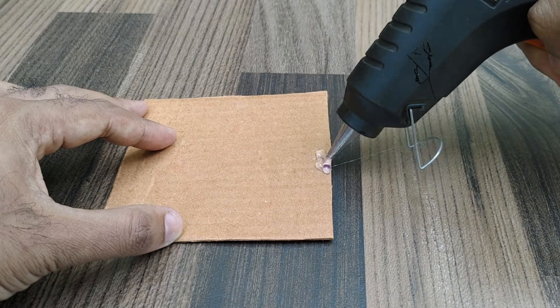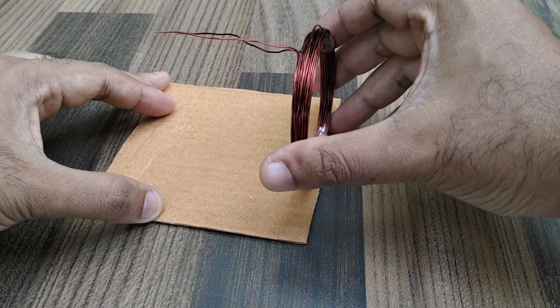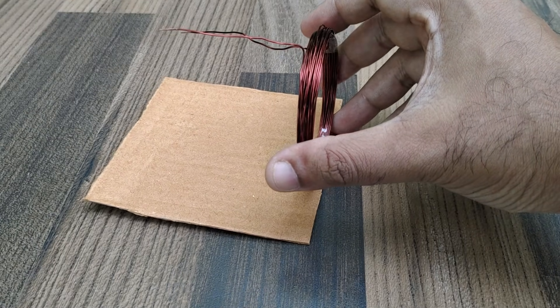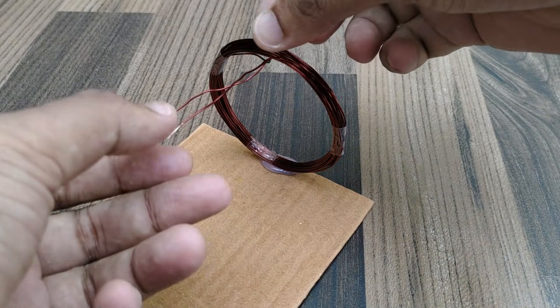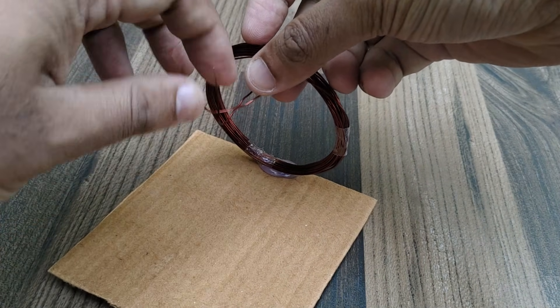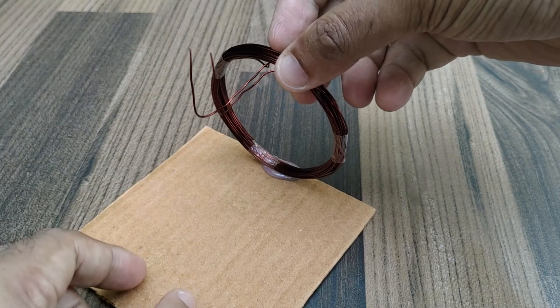Now we will make the receiver circuit. This is very easy. We just have to take an LED bulb and solder both the terminals of the bulb to the two terminals of the receiver coil.